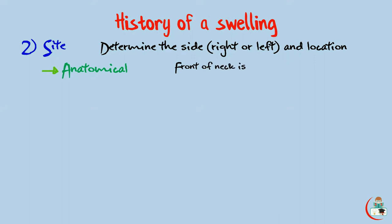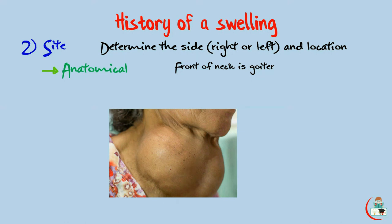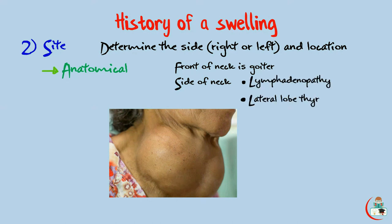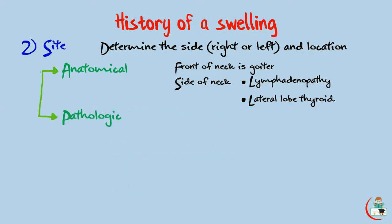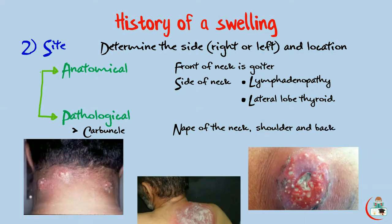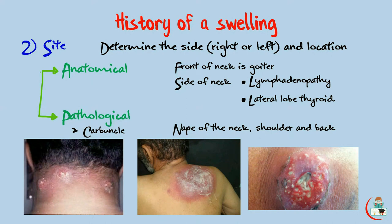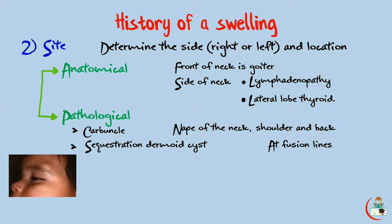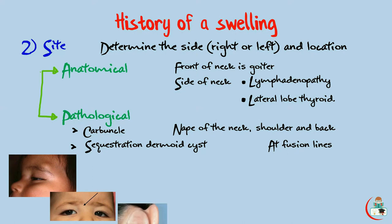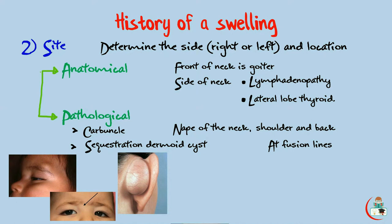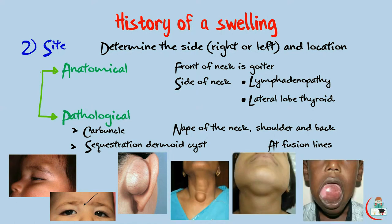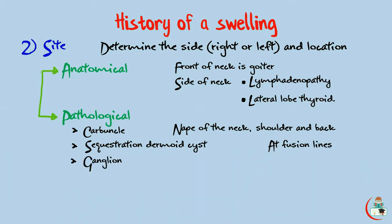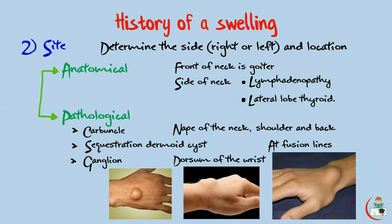For example, the common swelling affecting the front of the neck is thyroid gland enlargement or goiter. Swellings affecting the side of the neck are mostly lymphadenopathy or enlargement of the lateral lobe of the thyroid gland. Location may also help in making a pathological diagnosis — for example, carbuncle commonly affects the nape of the neck or the back. Sequestration dermoid cyst occurs at the lines of fusion: in the face it may be external or internal angular dermoid; there are also postauricular or preauricular cysts. In the neck it may be suprasternal, submental, or sublingual dermoid. Another example is dorsal ganglion, which commonly affects the dorsum of the hand or wrist, and also the dorsum of the foot.